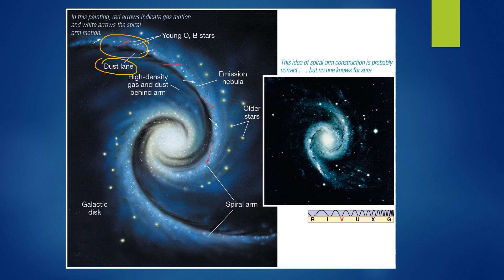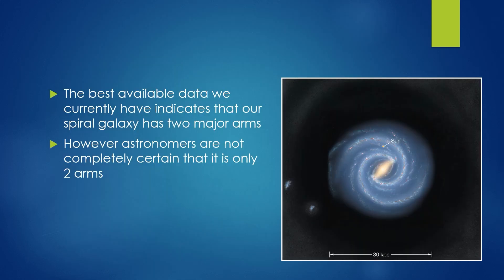The best available data about our galaxy tells us that we have a bar in the middle and indicates that we actually have two major arms. Astronomers are not completely certain, but the evidence shows there are really two major arms and two minor arms which were originally thought to be two additional arms — so originally scientists believed we had four major arms, but now we realize it's two major arms with two minor arms. The two major arms connect to the interstellar bar that passes through the nucleus of our galaxy.